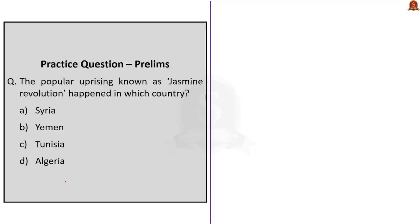Second practice question: 'The popular uprising known as Jasmine Revolution happened in which country — Option A: Syria, B: Yemen, C: Tunisia, D: Algeria.' The correct answer is Option C, Tunisia.